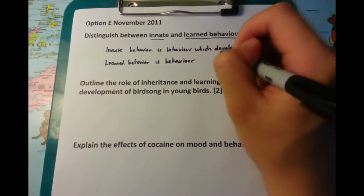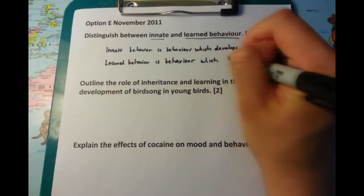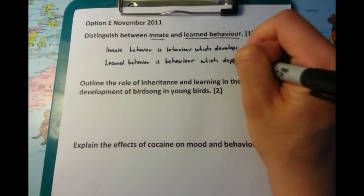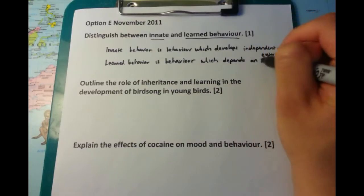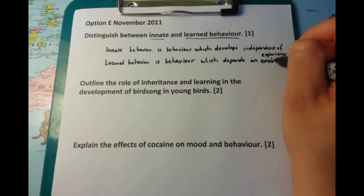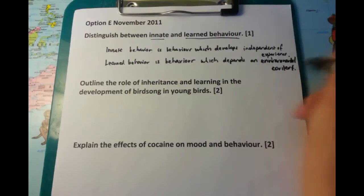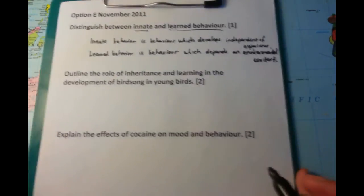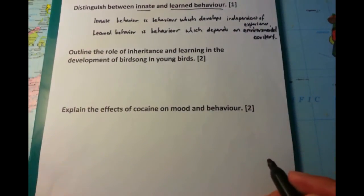The second question asks to outline the role of inheritance and learning in the development of birdsong in young birds. There are two aspects of birdsong to address: the inheritance and the learning. That's the easy part.